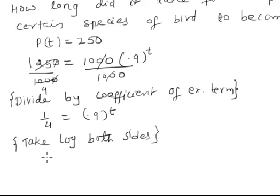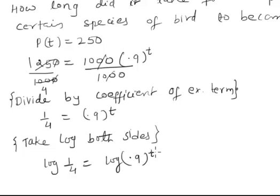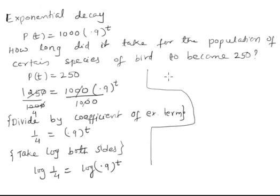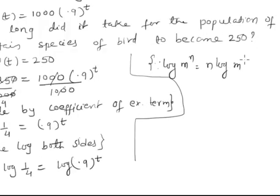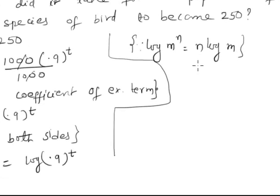After you take logarithm of both sides, it becomes log(1/4) equals log(0.9) raised to T. Because we know that log of m to the power n is n times log of m, so log(1/4) equals T times log(0.9).